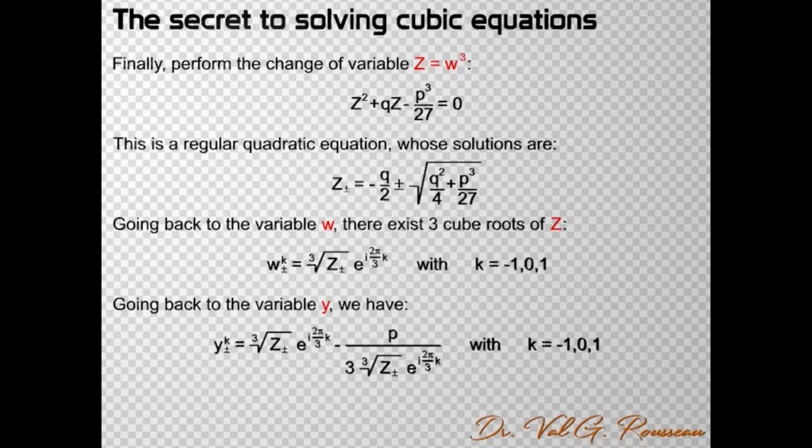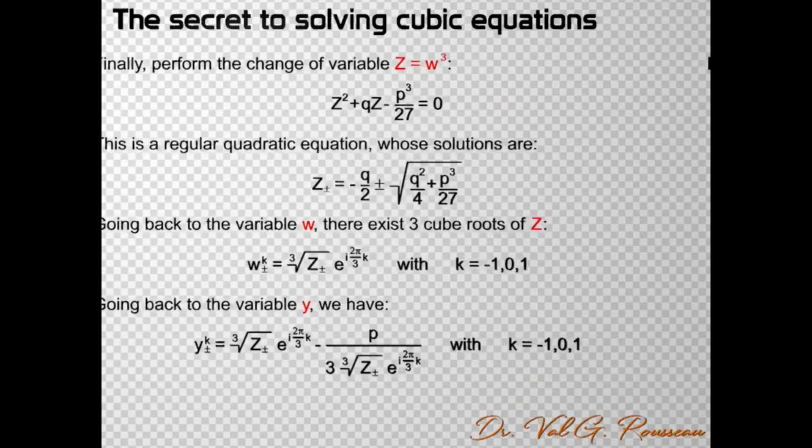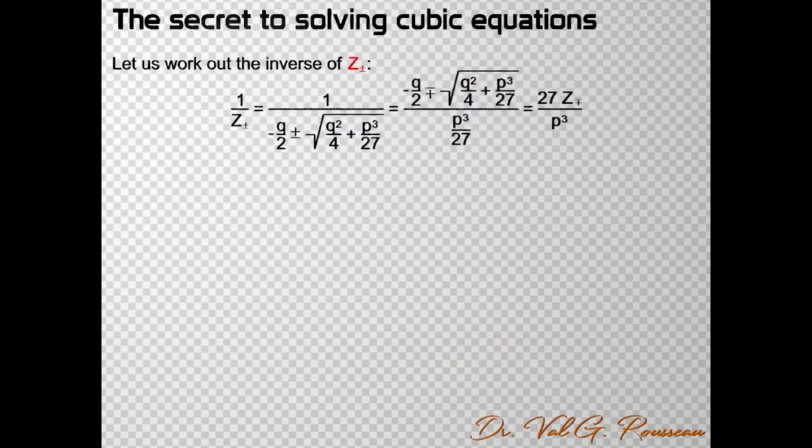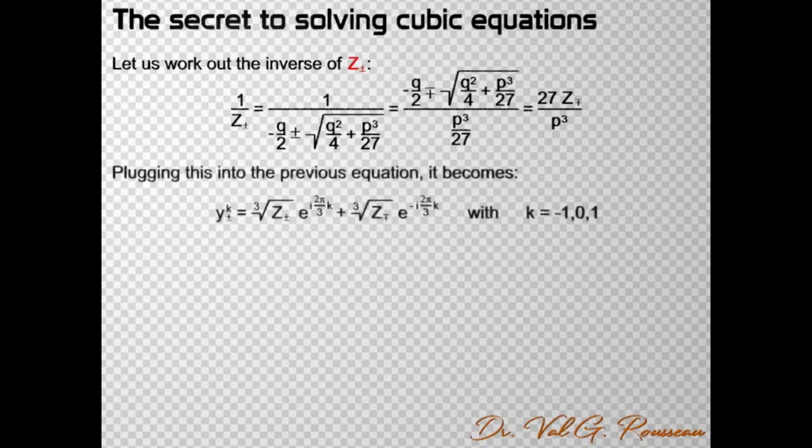However, we can work at the inverse of z± and find that it simplifies as 27z∓/p³. If we plug this expression for the inverse of z into the previous equation, then we obtain a much nicer expression that is symmetrical.